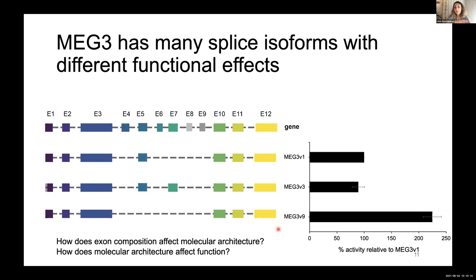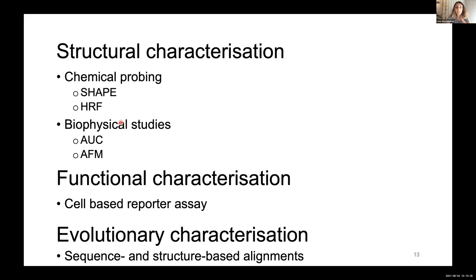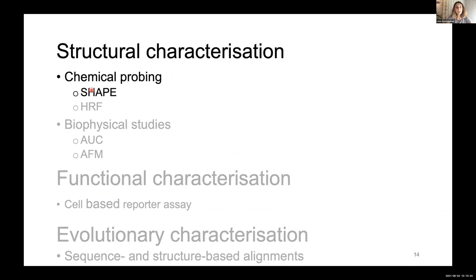To start answering this question, we employed a three-legged approach that depended on characterizing MEG3 at the structural, functional, and evolutionary levels. For each of those legs, we had a set of experiments. The first technique I want to discuss is Selective Hydroxyl Acylation analyzed by Primer Extension — or SHAPE — which is used to assess the secondary structure of an RNA.